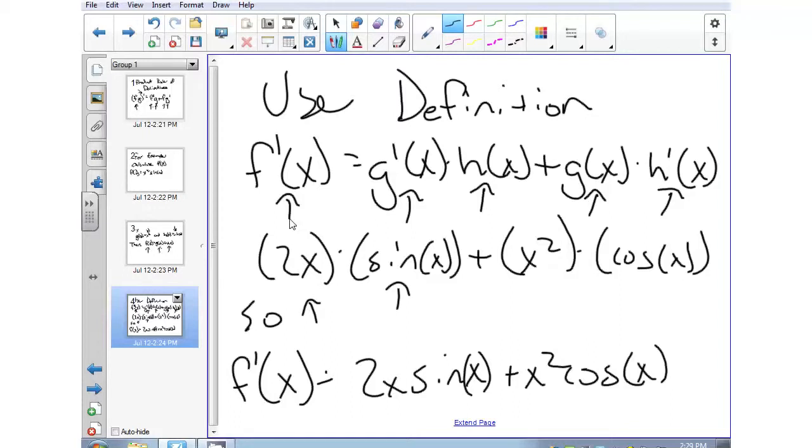Then we're going to add the second set which is g of x, that is x squared, times the derivative of h of x which is cosine of x because the derivative of sine of x is cosine of x.